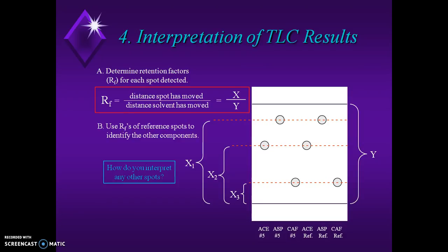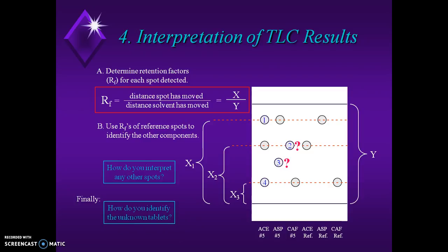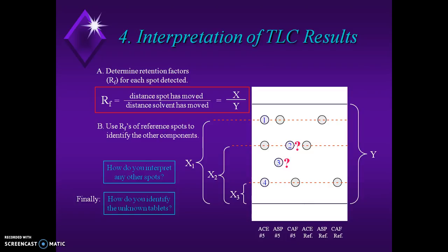The last part of thin layer chromatography is the interpretation of TLC results. RF values are calculated as the distance traveled by the substance divided by the distance traveled by the solvent. We calculate the RF value for the particular compound and compare the RF values of components in the mixture. By comparing RF values, we determine what the particular components of the mixture are. That concludes the general introduction to thin layer chromatography.